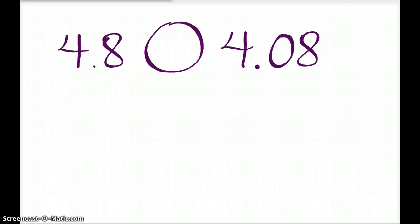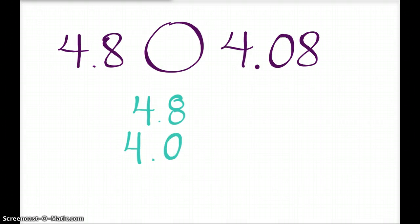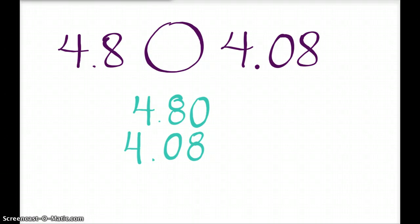We have the decimal here — 4 and 8 tenths, and 4 and 8 hundredths. Remember, the first step is to line up your decimal points, so I'm going to want you to rewrite this with the decimal points lined up. Who can tell me what the next step is? We've got to add a zero at the end of 4 and 8 tenths. Perfect. We're going to put a zero right here to fill that place, and now they have the same amount of digits. It's easier for our eyeballs to look at it and our brains to register which one is bigger. So who can read this number sentence to us now with the greater than, less than, or equal to sign filled in? 4 and 8 tenths is greater than 4 and 8 hundredths. Perfect.